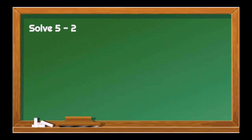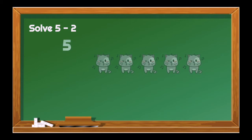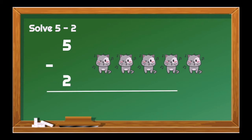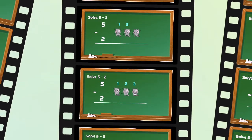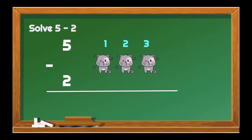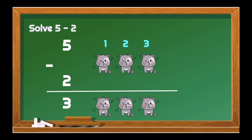This time, we're going to solve it manually. Our first given is 5 minus 2. We have 5 cuts here. All we have to do is take away 2 cuts. That would give us 3. So, 5 minus 2 is equal to 3. Well done!